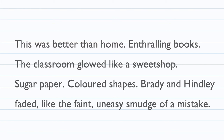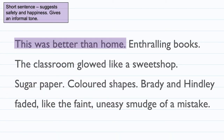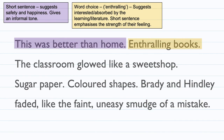The next stanza says: 'this was better than home. Enthralling books, the classroom glowed like a sweet shop. Sugar paper, coloured shapes.' We see a turning point suggested by the short sentence. It does suggest safety and happiness, but also gives an informal tone. This child feels so safe they prefer to be here than at home. 'Enthralling books' — the word choice suggests the speaker is absorbed by the literature they're learning, and the short sentence emphasises the strength of that feeling. They are very confident that they enjoy this learning process.